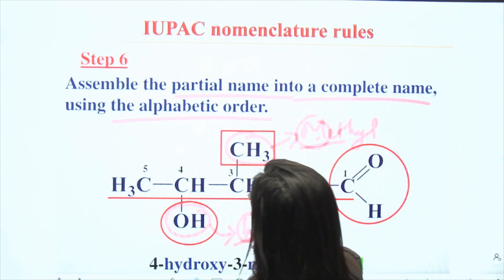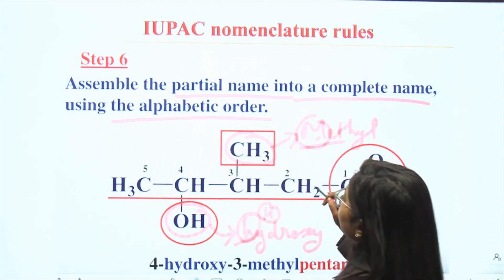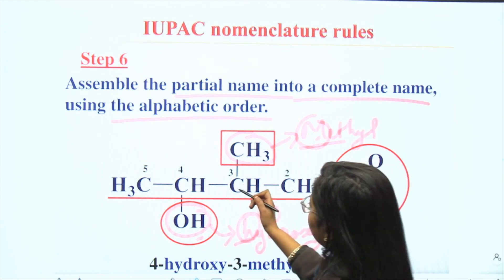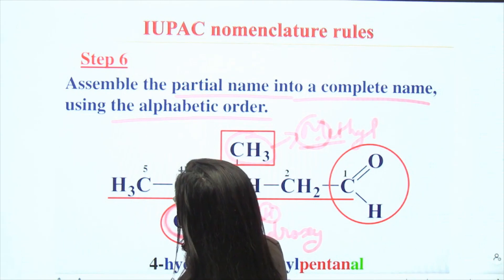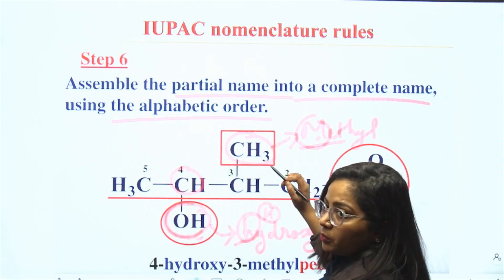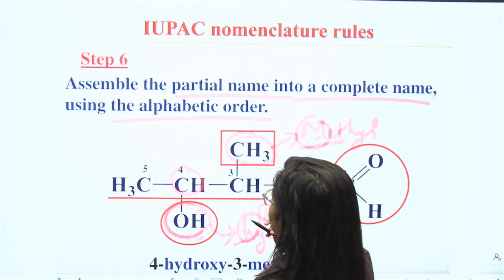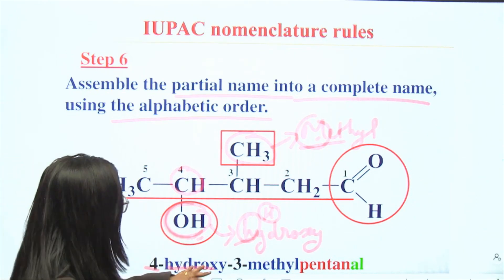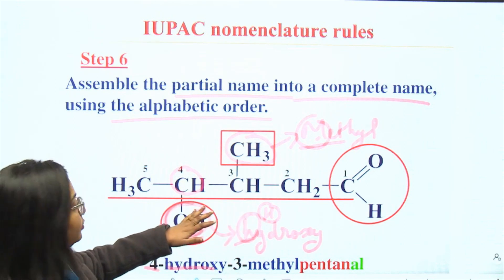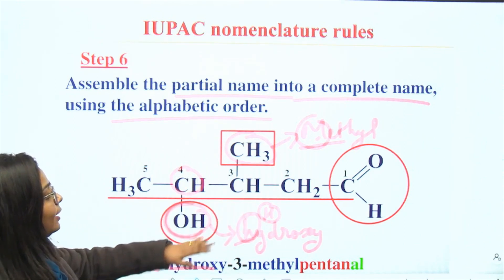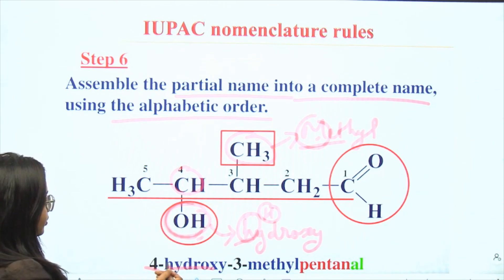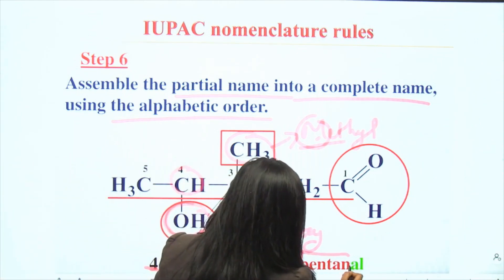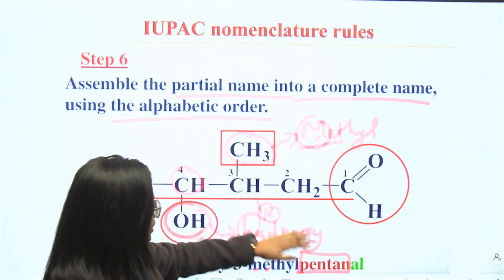We have already assigned the numbers for the main carbon chain. The hydroxy group is present on carbon 4, and the methyl group is present on carbon 3. So the name so far is 4-hydroxy-3-methyl. We give hydroxy priority because of alphabetical order. The main chain is pentane, so the name builds to 4-hydroxy-3-methyl pentane — with the suffix still to be added.